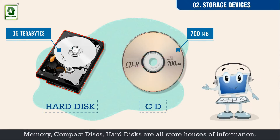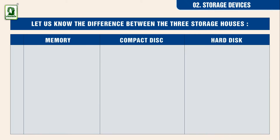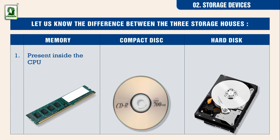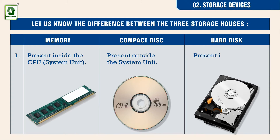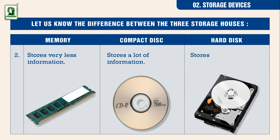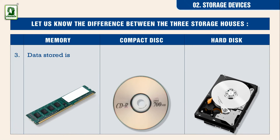Memory, compact disks, and hard disks are all storehouses of information. Let us know the difference between the three storage devices. Memory is present inside the CPU. A compact disk is present outside the system unit. A hard disk is present inside the system unit. Memory stores very less information; a compact disk also stores less information; a hard disk stores a lot of information — more than memory or a compact disk. Data stored in memory is temporary, while data stored on a compact disk or hard disk is permanent.